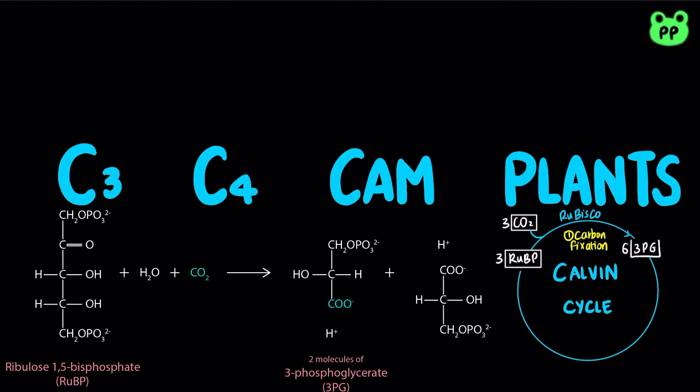For each round of Calvin Cycle, three molecules of carbon dioxide combine with three molecules of RuBP to form six molecules of 3-phosphoglycerate.